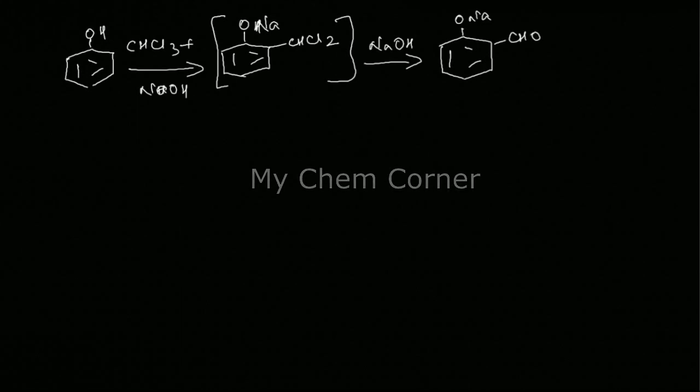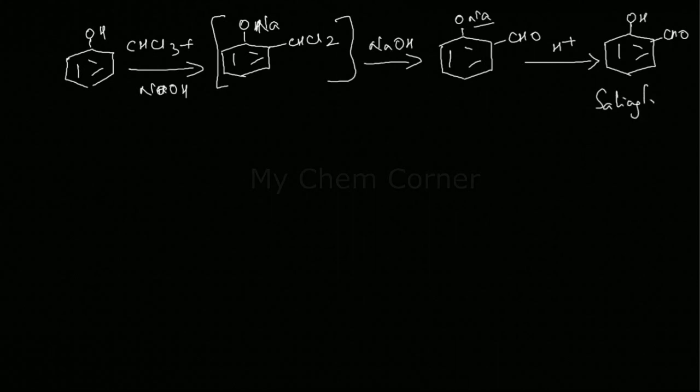This will become ONa and a CHO. The reaction hasn't completed because you have ONa over here, so you react it with an acid to form OH and a CHO. This is called salicylaldehyde. So you have four equations written here.